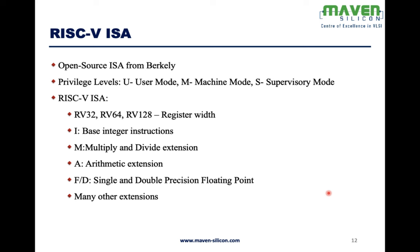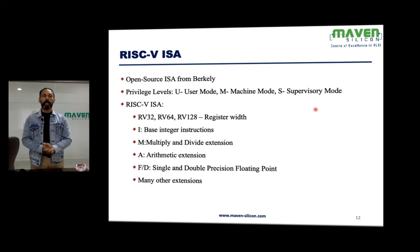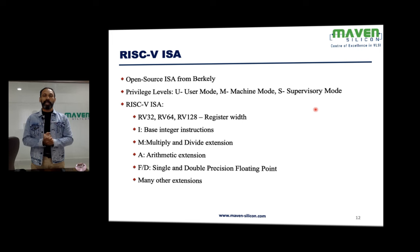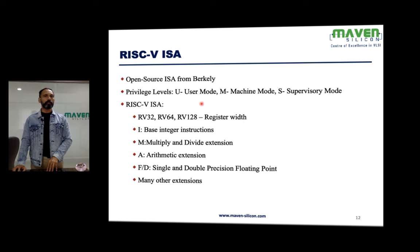RISC-V is an open-source instruction set architecture from Berkeley. It has privilege levels — user mode, machine mode, and supervisory mode. User mode is primarily used for simple embedded systems, microcontrollers, or IoT devices, while machine mode or supervisory mode is preferred for complex secure systems. RISC-V ISA comes in different flavors: RV32, RV64, and RV128 — referring to 32-bit, 64-bit, or 128-bit register widths.